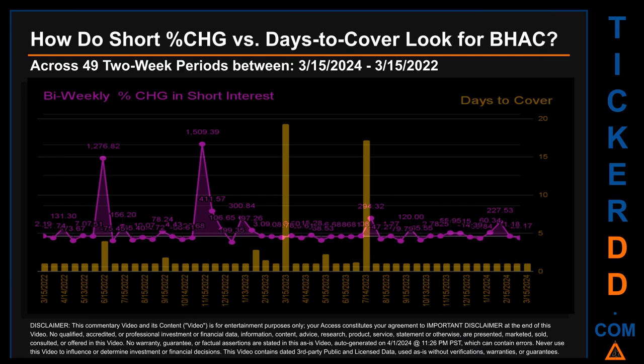Zooming out, I looked across 49 two-week snapshots from the latest found March 15th, 2024 to the oldest found March 15th, 2022. In the graph I overlaid bi-weekly percentage change in short interest against days to cover across these 49 two-week snapshots. The average percentage change of short interest was about 81.61. The largest percentage increase in short interest was 1,509.39. The largest percentage decrease was minus 99.35 percent, occurring once on December 30th, 2022 settlement date. The average days to cover was about 1.85, and the biggest days to cover was 19.3, happening once on March 15th, 2023 settlement date.